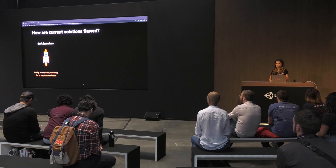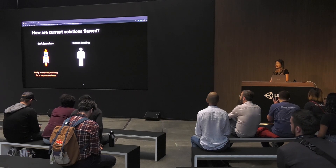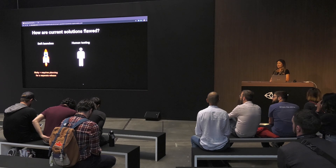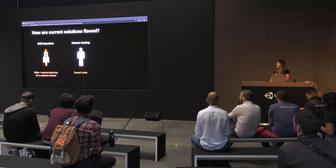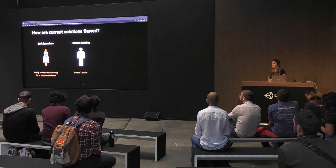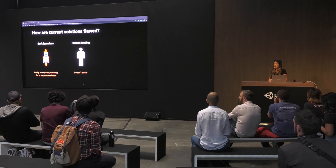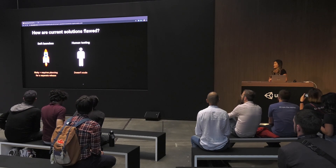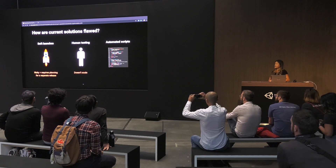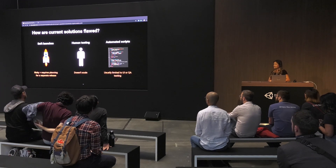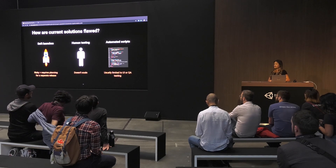Those test players might not be representative of your players on the whole when you actually do want to launch. Another popular solution is human testing, and like the aforementioned problems, this can be expensive and it doesn't really scale very well, because it takes many hours for a contractor to get good at a game, and you have to do a playtest every time you release a new build — this cost just starts to add up. A third popular solution is automated tests or automated scripts, and while this is great for UI or QA testing, it's not really robust enough for game balancing and doesn't really solve that problem.